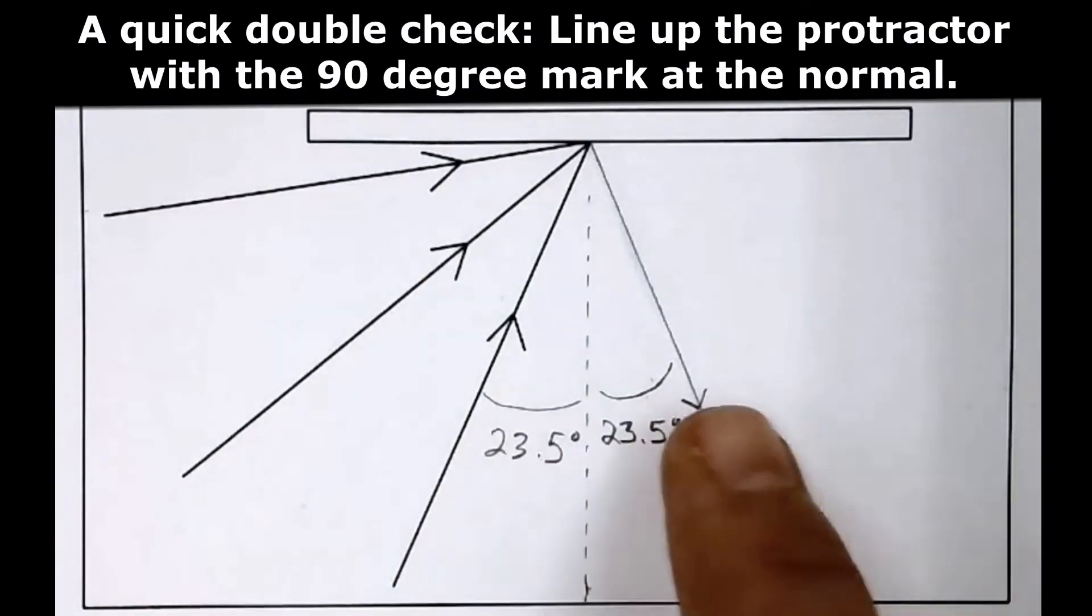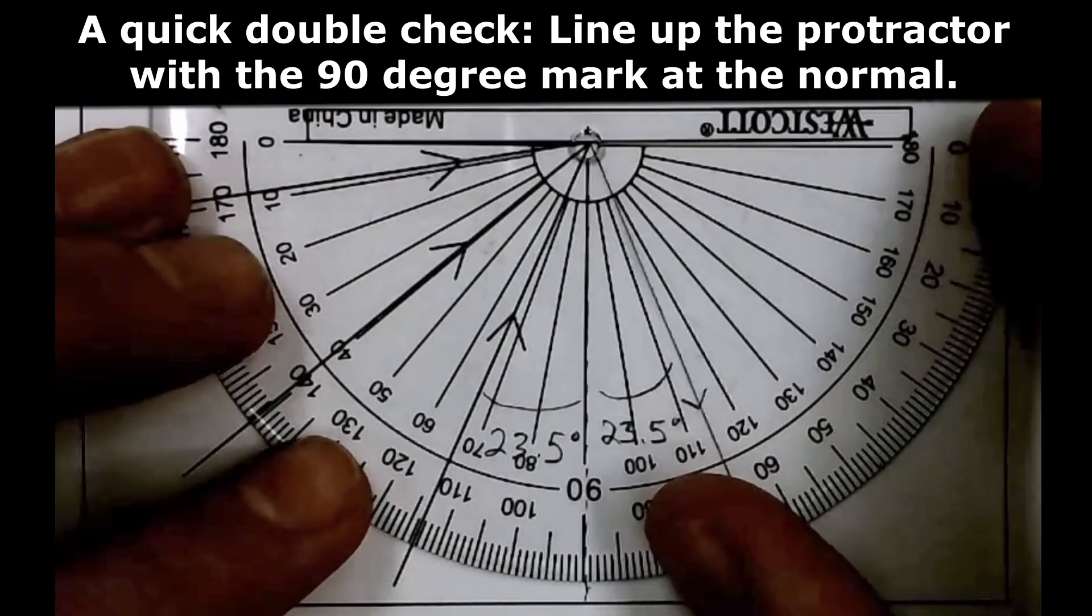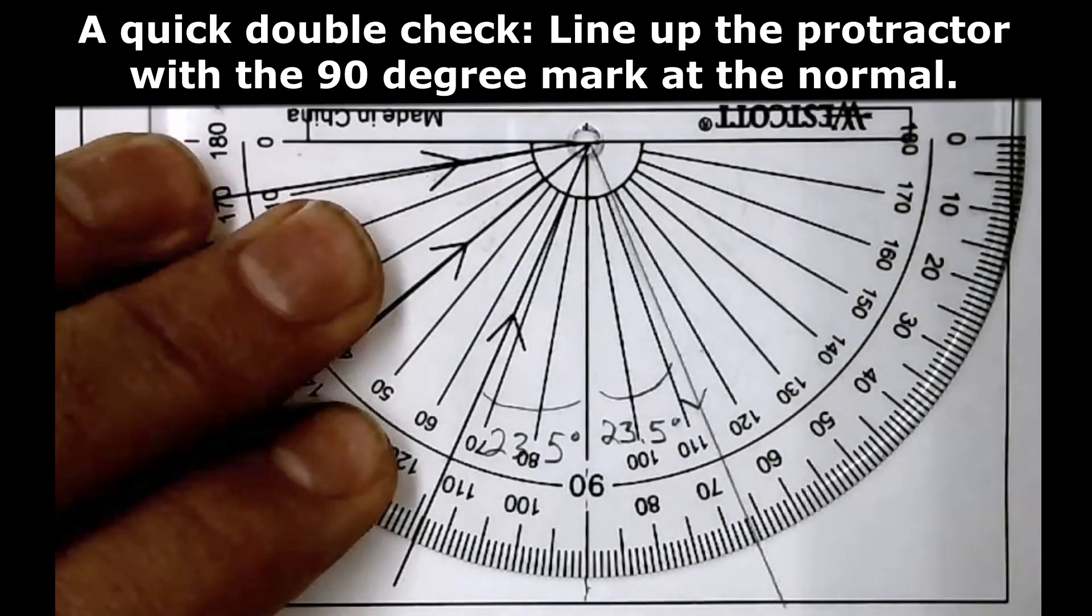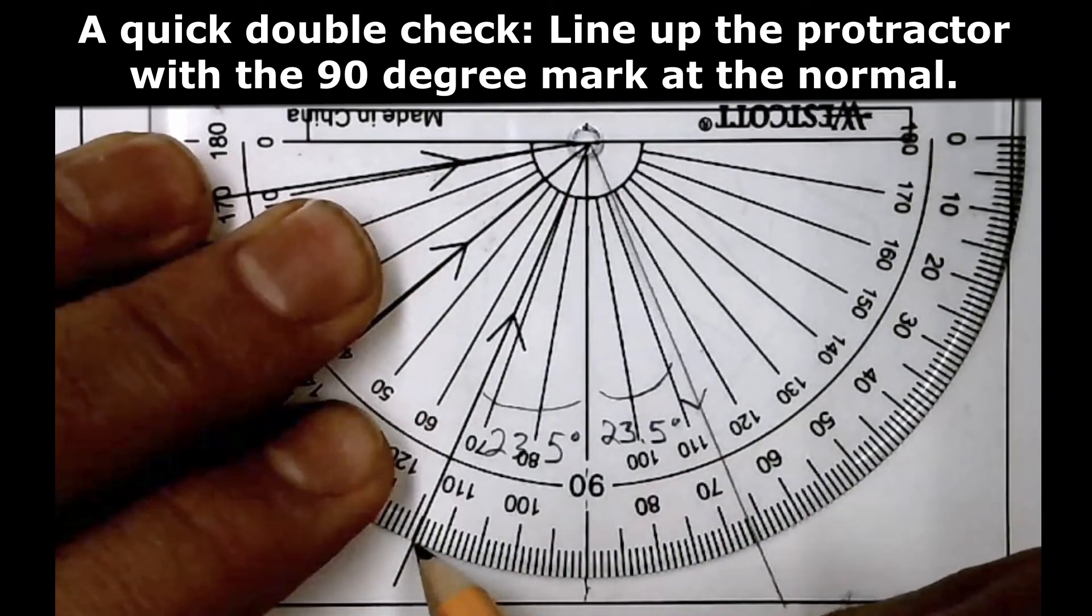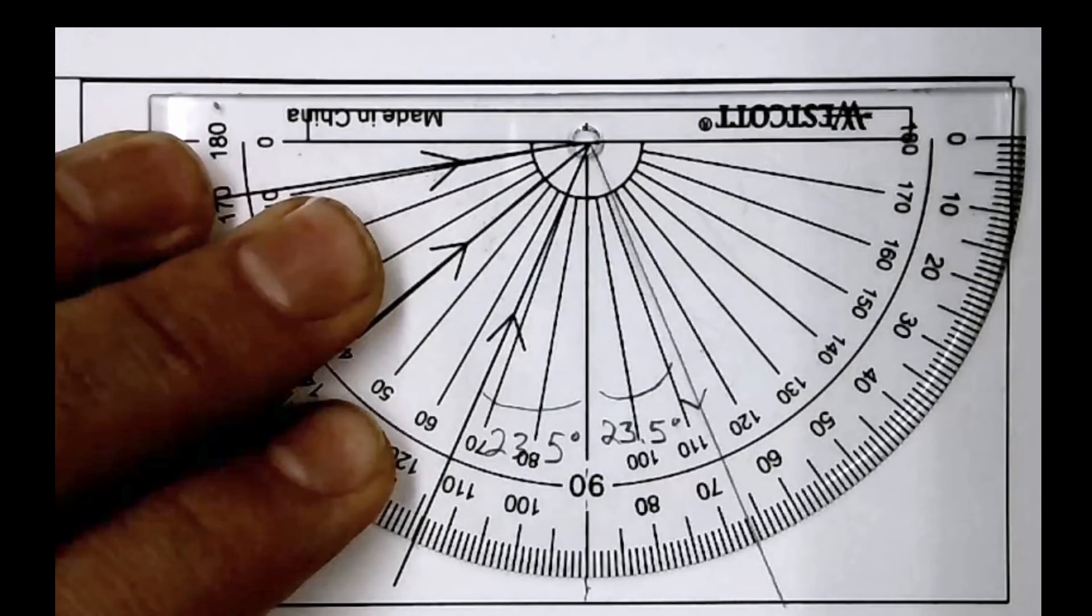We can even do a quick double check. Let's line up our protractor so that the 90 is back on the normal. And we can see that our incident ray and our reflected ray are very close to one another. There's always tiny differences when we do our drawings, but here we have a very precise result.